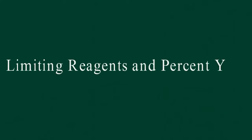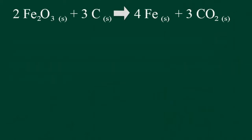This video explains how to calculate the limiting reagent and percent yield of a chemical reaction. We will be looking at the reaction between hematite and carbon.